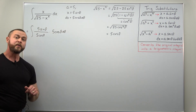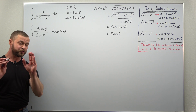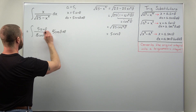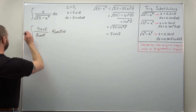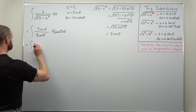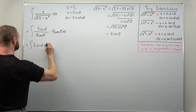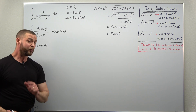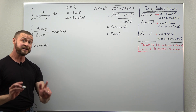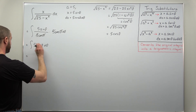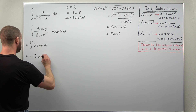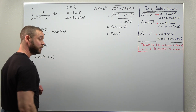At this point we have a very simple trig integral because the factors of 5 and cosine theta cancel out. We're left with the integral of 5 sine theta. The antiderivative of sine is negative cosine, so we get negative 5 times cosine theta plus C.